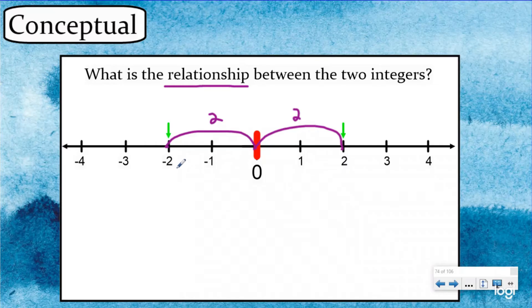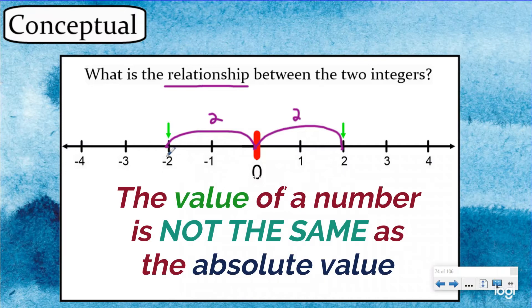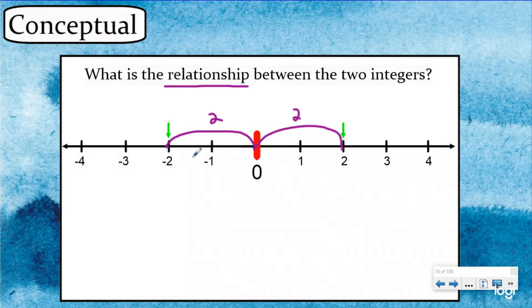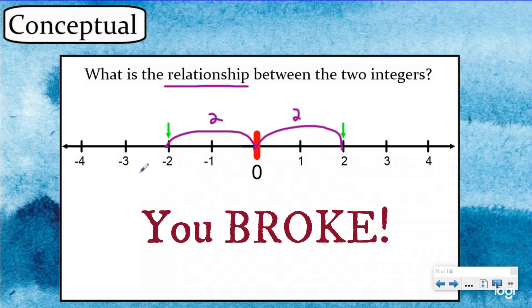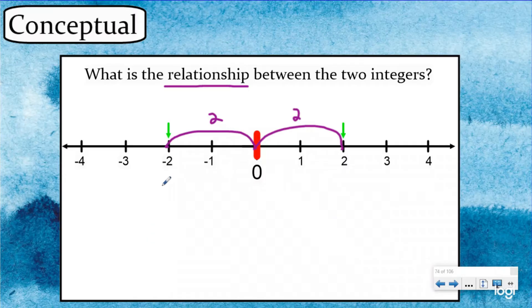Before we get into this, there's a concept we'll continue to talk about throughout the lesson: the value of a number is not the same thing as the absolute value. The value of a number is what it's worth. The absolute value is how far from zero it is. For instance, if you have negative two dollars in your checking account, that means you owe the bank two dollars — you have less than zero. But the absolute value of that would still be two because it's two units away from zero.